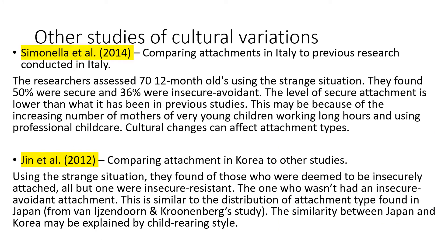Now looking at the other studies of cultural variations, which you'd use for AO1 marks in an essay. Simonella et al. compared attachments in Italy to previous research conducted in Italy. They assessed 70 twelve-month-olds using the strange situation and found 50% were secure and 36% were insecure avoidant. The level of secure attachment is lower than in previous studies, and they suggested this could be due to the increasing number of mothers of very young children working longer hours and using professional childcare — so cultural changes can affect attachment types.